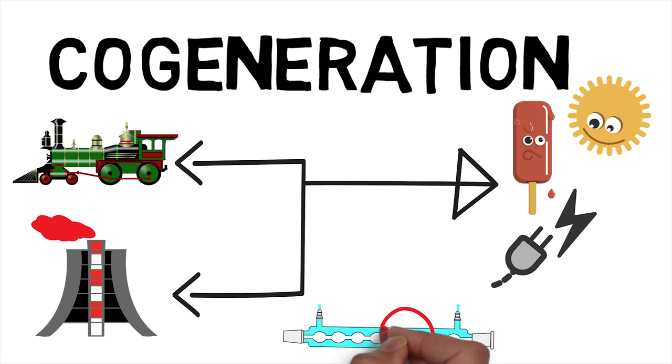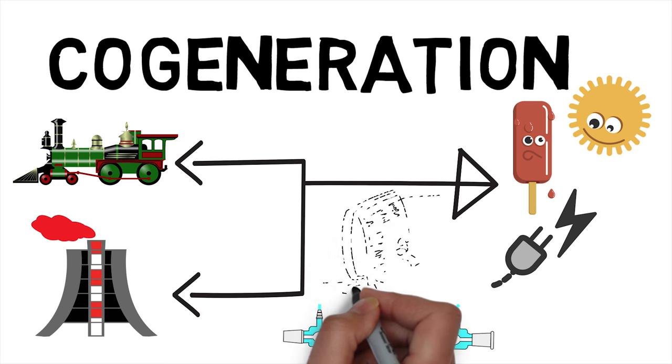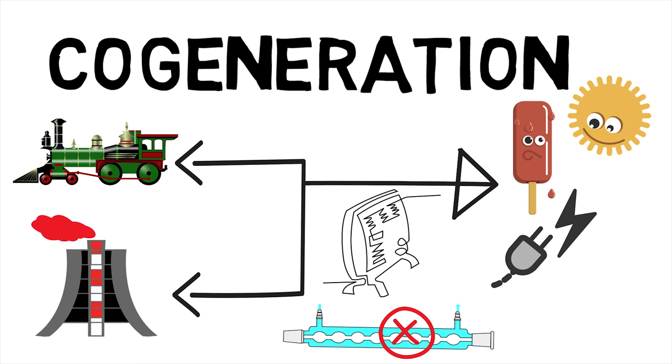Unlike the reheat Rankine cycle, which uses a condenser to condense the steam to liquid, cogeneration uses a process heater to transfer the heat as required.